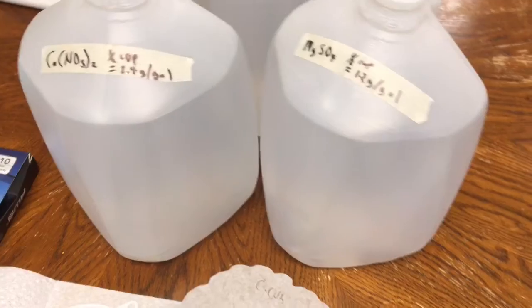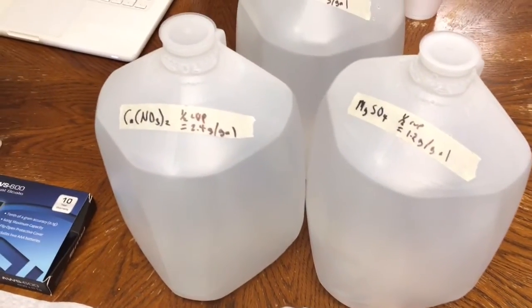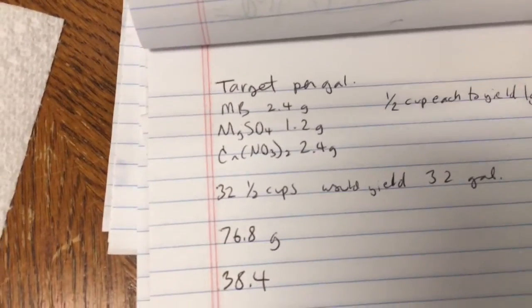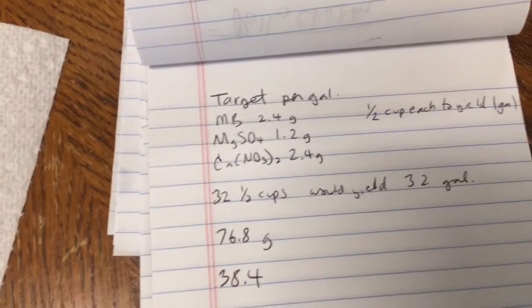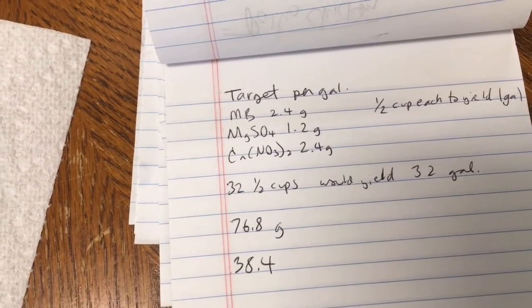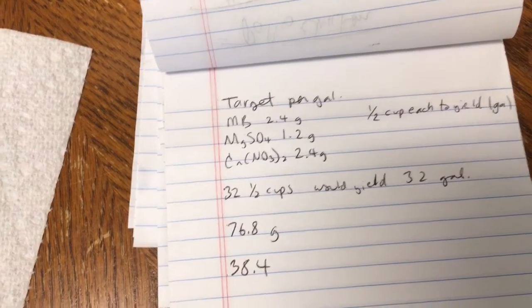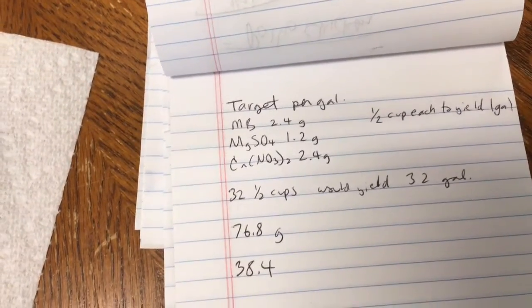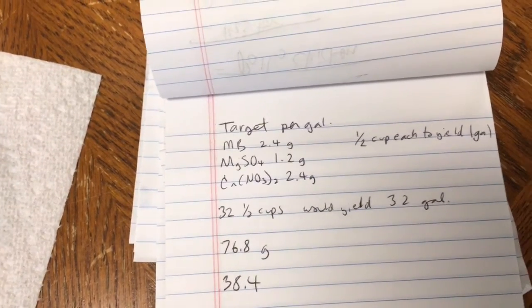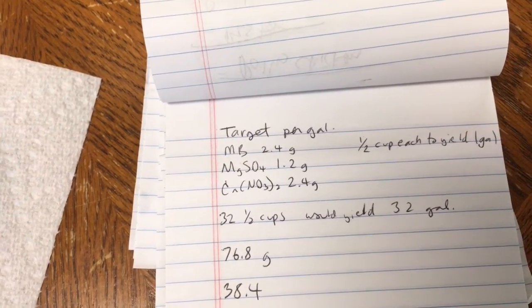The target that I'm going for, I'll show you my notes: 2.4 grams of master blend, 1.2 grams magnesium sulfate, and 2.4 grams of calcium nitrate per gallon. I want to be able to measure a half a cup from each to mix one gallon of full strength.